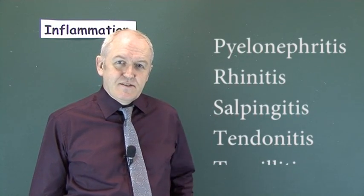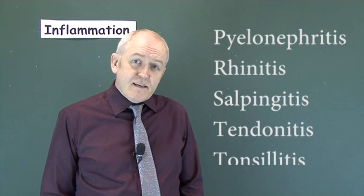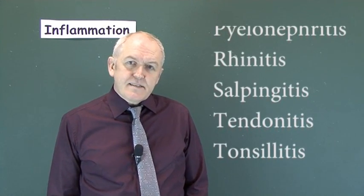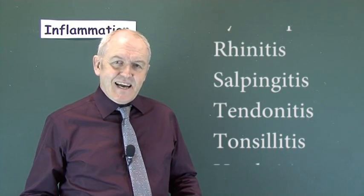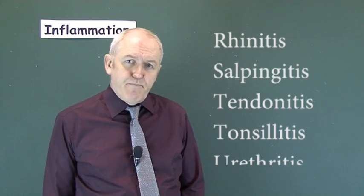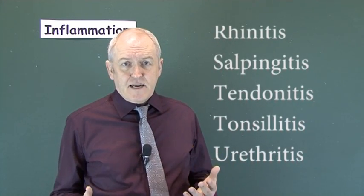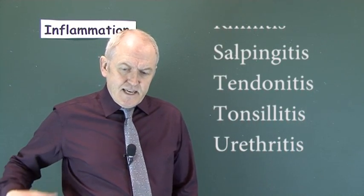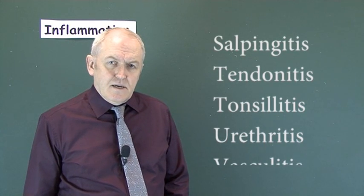Rhinitis is inflammation of the nasal cavities. It can be caused by a cold virus — a rhinovirus — giving you a runny nose, and it can also be caused by allergic conditions such as hay fever. Salpingitis is inflammation of the uterine tubes (formerly called fallopian tubes), usually an ascending infection through the vagina, cervix, and uterus as part of pelvic inflammatory disease. With bacteria such as chlamydia, the patient may not know they have it, and progressive scarring of the uterine tubes can result in infertility.